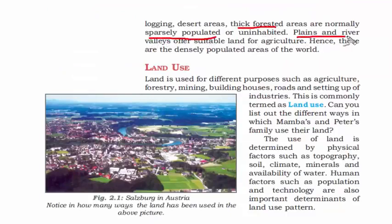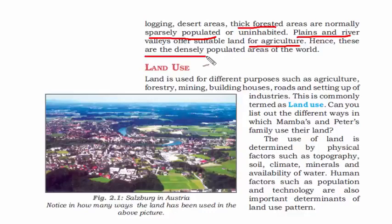Plains and river valleys, which are next to a river or a large body of water, usually have land suitable for agriculture because of the soil deposited by rivers. Where there is agriculture, there is food, and then businesses can take place. Therefore, these areas are the densely populated areas of the world.